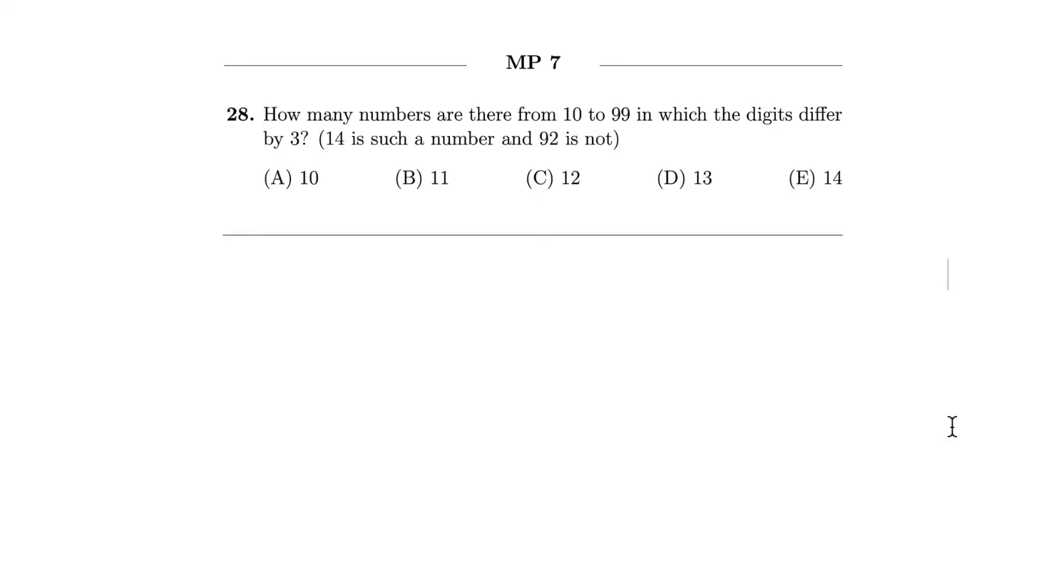So here is question number 28. How many numbers are there from 10 to 99 in which the digits differ by three? So 14 would be a number, but 92 would not. So let's figure out a way to count these numbers. First, let's find the number of numbers where the first digit, so first case, case one, the tens digit is less than the ones digit. So three less, because it has to be a difference of three. So that means how many ways to do that? It has to be at least 10, so we're going to have one, and then if it's three less than the ones digit, that means the ones digit is going to be four.